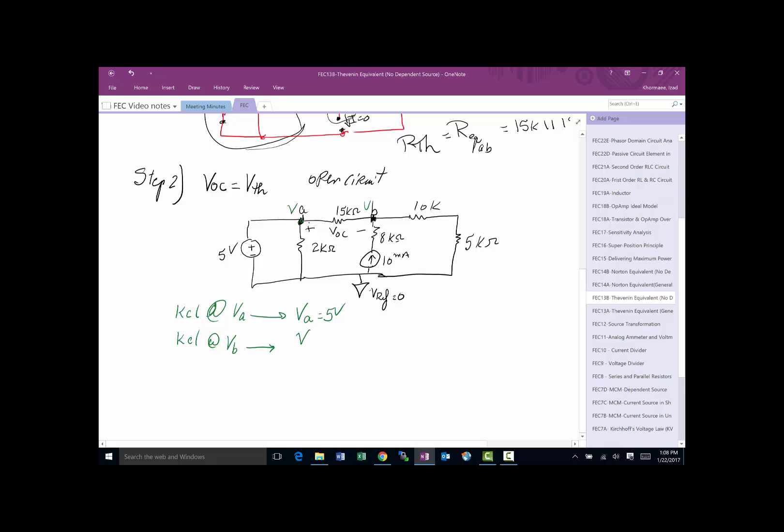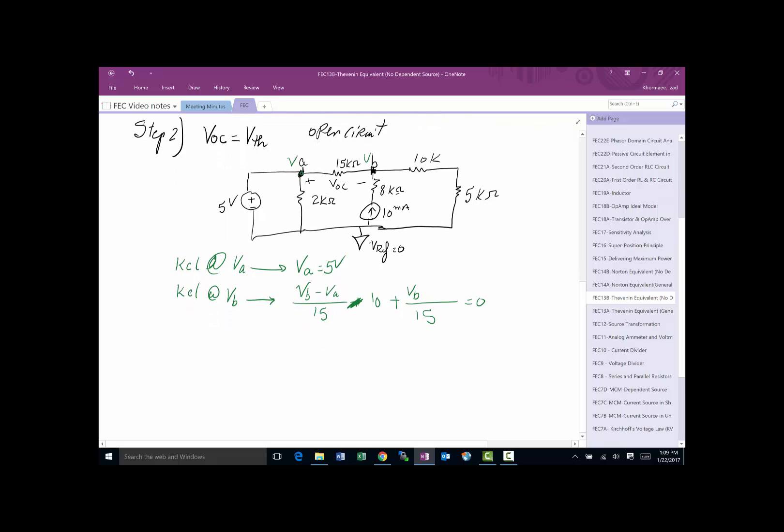So anyway, so I've got to calculate the current this way which is going to be VB minus VA divided by 15 plus actually it's going to be minus since it's coming in minus 10 plus VB minus 0 divided by 10 plus 5 which is 15 equal to 0. Really kind of very straightforward. We're going to solve this one. We're going to find that VB is equal to 77.5 volts.